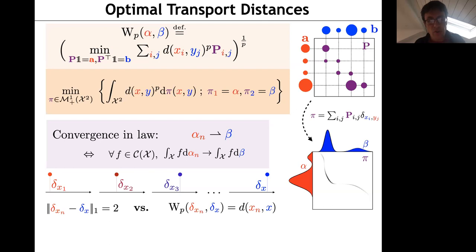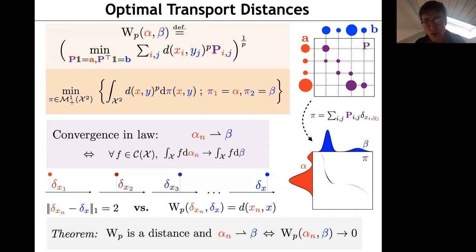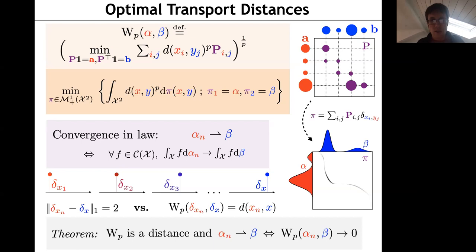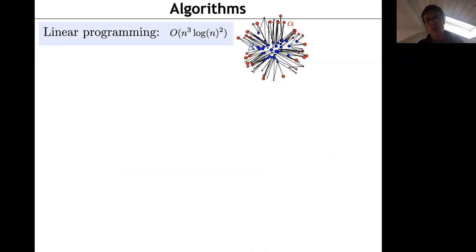The Wasserstein distance is more or less the only formula with this nice property that it equals the ground distance when evaluated on Diracs. Convergence in Wasserstein is equivalent to weak convergence, which is why it is popular in probability for quantitative statements like the central limit theorem. More importantly for machine learning: it is the correct geometric notion of convergence when distributions exhibit shifts in their modes — something the L1 norm cannot handle. This is the main take-home message: Wasserstein distance is natural when you care about displacement phenomena.